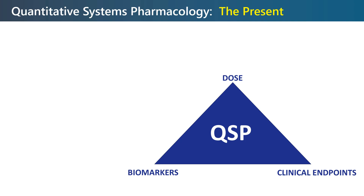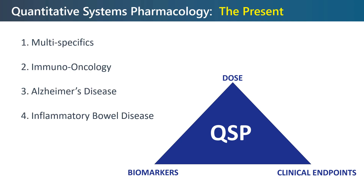These examples from FDA and EMA show how the focus of QSP has evolved from preclinical target evaluation to a much broader application in clinical development, with an emphasis on dose selection, biomarker selection and interpretation, and increasingly prediction of clinical endpoints.